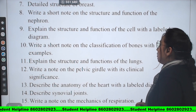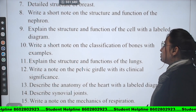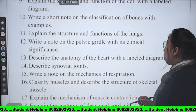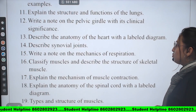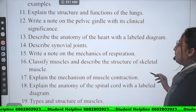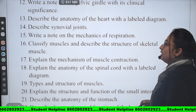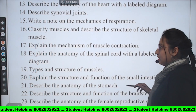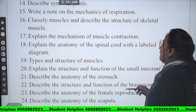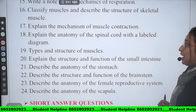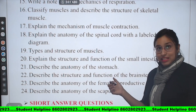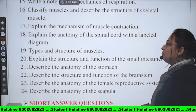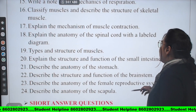Eighth: Write short notes on the structure and function of the nephron. Ninth: Explain the structure and function of the cell with a labelled diagram. Tenth: Write short notes on the classification of bones with examples. Eleventh: Explain the structure and function of the lungs. Twelfth: Write a note on the pelvic girdle with its clinical significance. Thirteenth: Describe the anatomy of the heart with a labelled diagram. Fourteenth: Describe synovial joints. Fifteenth: Write a note on the mechanics of respiration. Sixteenth: Classify muscles and describe the structure of the skeletal system. Seventeenth: Explain the mechanism of muscle contraction. Eighteenth: Explain the anatomy of the spinal cord with a labelled diagram.